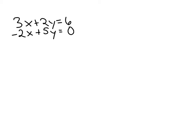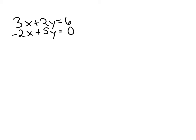I'm going to do 2 times equation 1. So 2 times the 3x gives us 6x, 2 times the 2y gives us positive 4y, and 2 times 6 gives us 12.